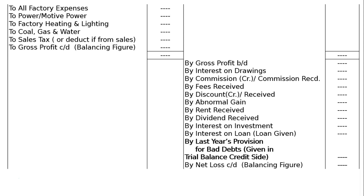If expenses exceed income, then 'by net loss carried down' is the balancing figure — written on the credit side to balance the account.